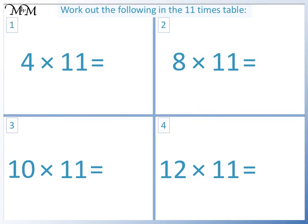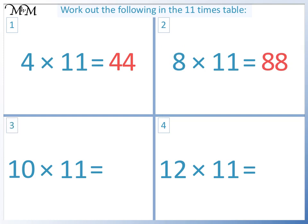Question 1: we repeat the digit 4 — 4 times 11 equals 44. Question 2: 8 times 11 equals 88. Question 3: 10 times 11 is 11 with a 0 on the end — 10 times 11 equals 110.